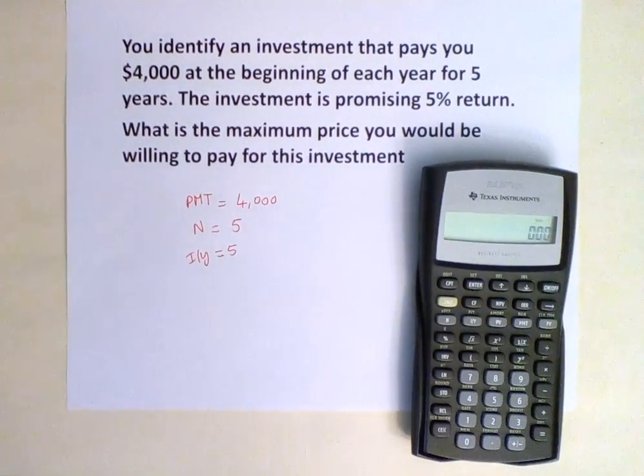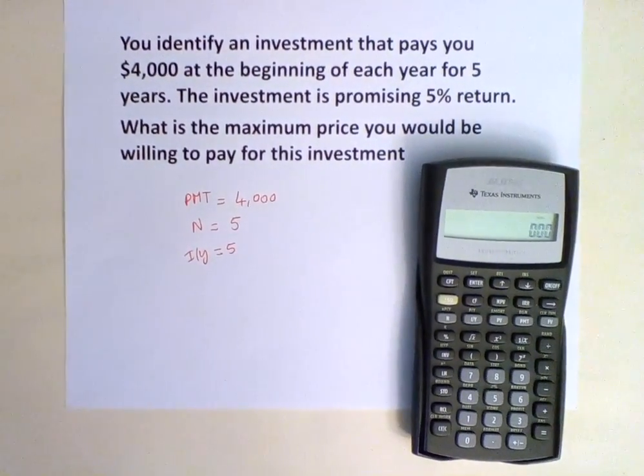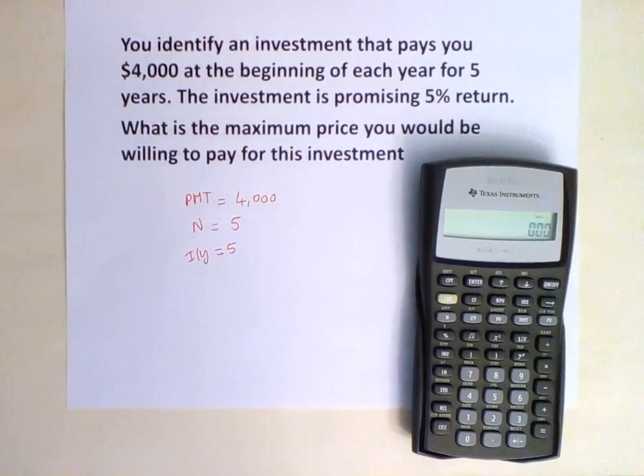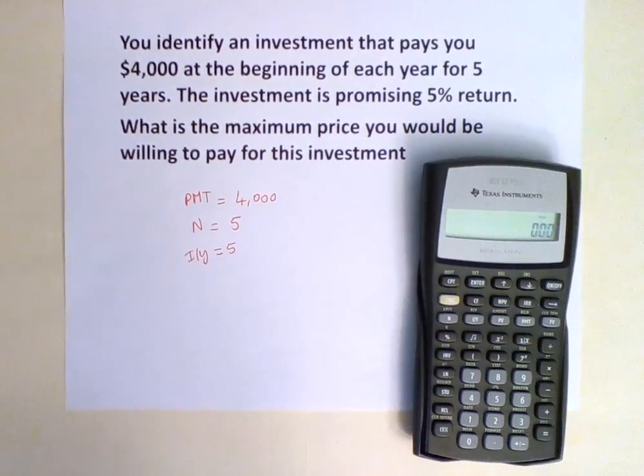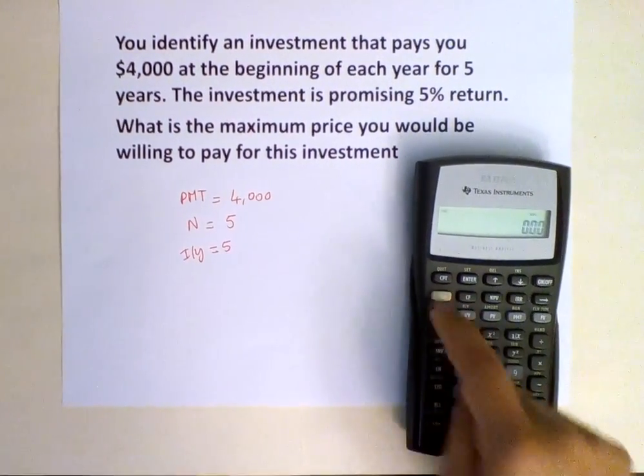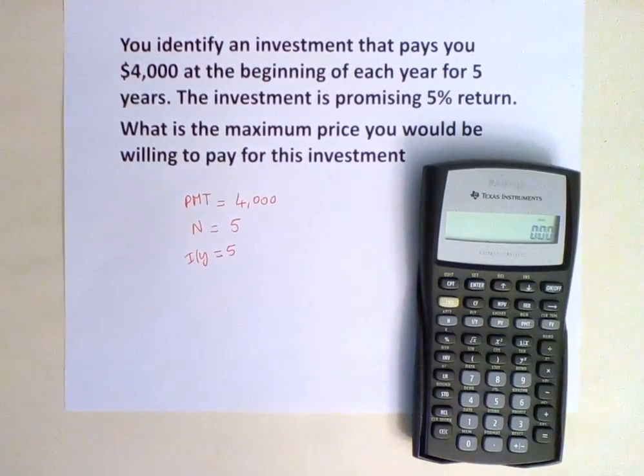Now we're ready to input the information. But before we do so, it's very good practice to always clear your work. You hit second, FV to clear the time value of money calculations you've done before, and second, CE/C to clear work.